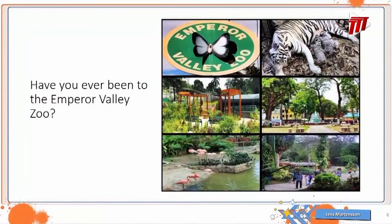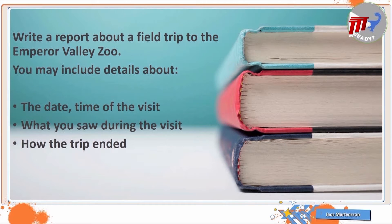Have you ever been to the Emperor Valley Zoo? Well, if you haven't, I'm sure that you can encourage your teacher to take you on a field trip there. Today's prompt deals with writing a report about a field trip to the Emperor Valley Zoo. The information students are asked to include would be details about the date and time of the visit, what you saw during the visit, and how the trip ended.